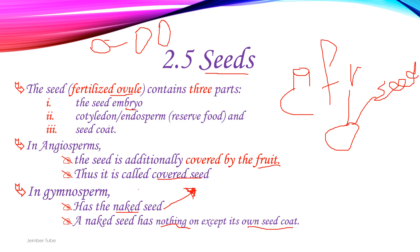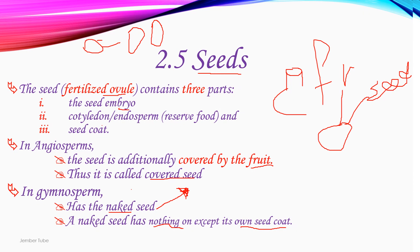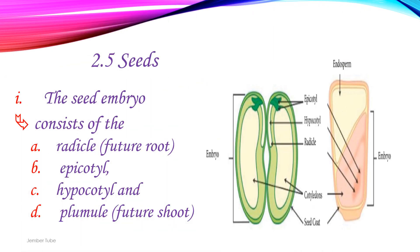The seed embryo consists of the radicle, which is known as the future root.